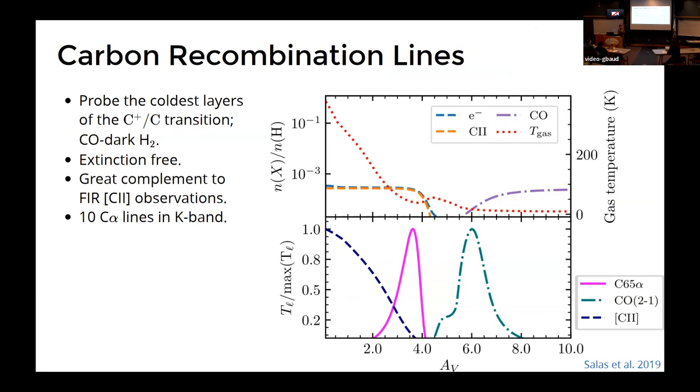These lines are also probing this ionized layers of the molecular cloud, but because the lines are very sensitive to temperature, you're actually probing a bit deeper into the PDR than with C+. That's what we're showing here.